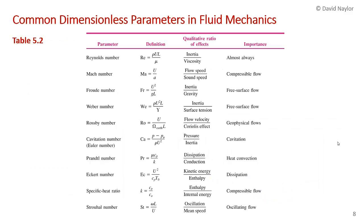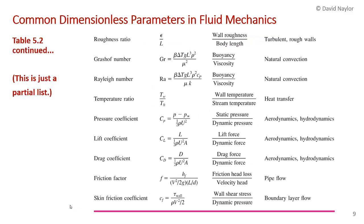Your book contains a list of many common dimensionless parameters in fluid mechanics. This is part of table 5.2. We've talked about many of these: Reynolds number, Mach number, Froude number, Weber number. There are others which I haven't discussed. There's Strouhal number down here, and the table goes on.